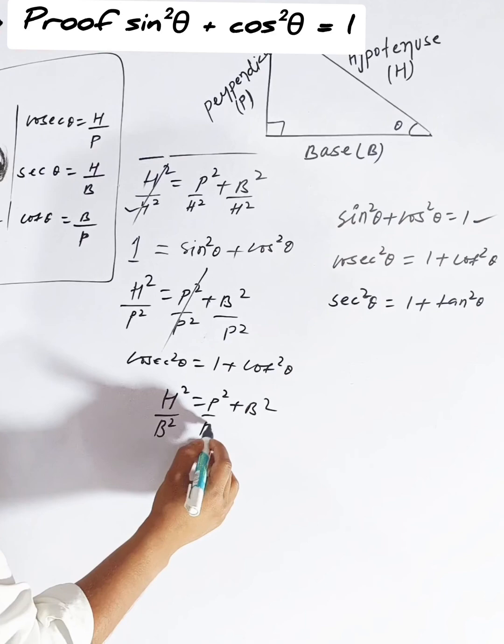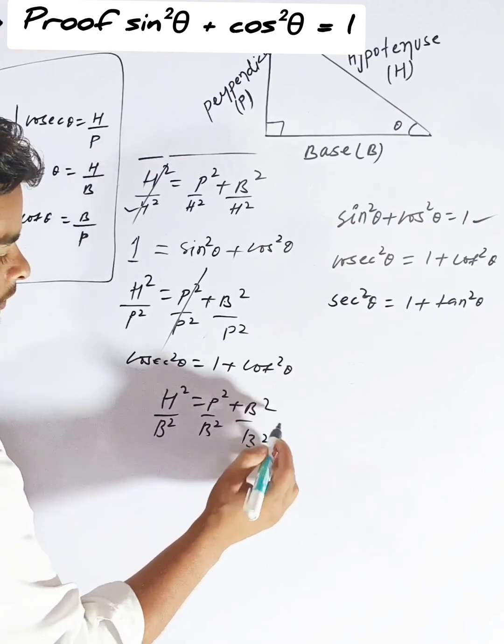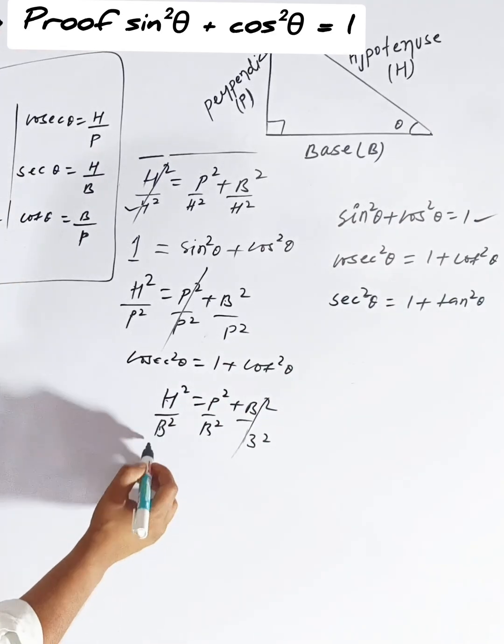What will it become now? Divide all by b squared. So what will you need now? b over b cancels out and what will it become for us?